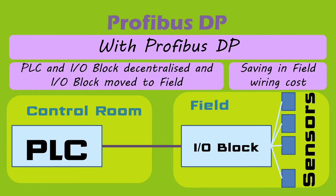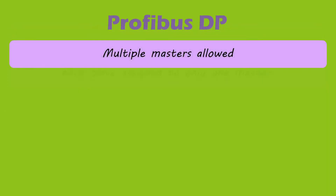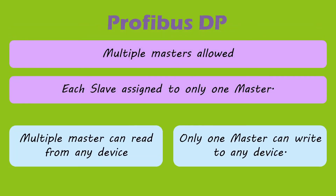Decentralization resulted in saving of wiring cost. Profibus DP allows use of multiple master devices in one network, in which each slave device is assigned to only one master. This means multiple masters can read inputs from any device, but only one master can write outputs to any device.